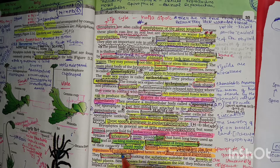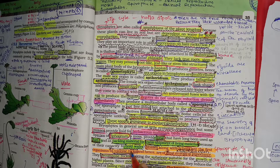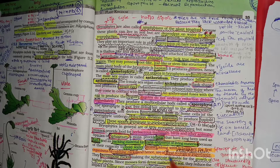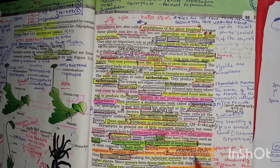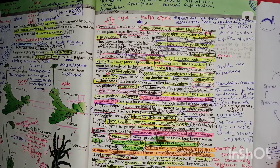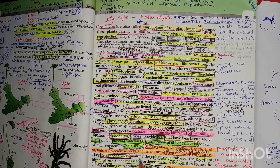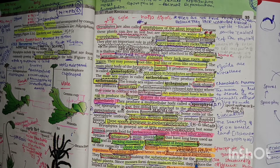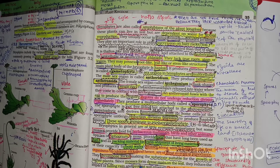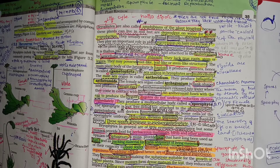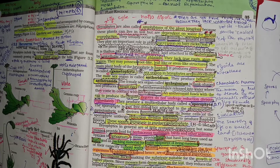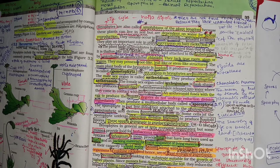Mosses and lichens decompose rocks and produce soil, which is helpful for the growth of higher plants, hence giving bryophytes great ecological importance. They also decompose rocks and make the substratum suitable for the growth of higher plants. Since mosses form dense mats of soil, they reduce the impact of rainfall, decreasing erosion and preventing soil erosion.